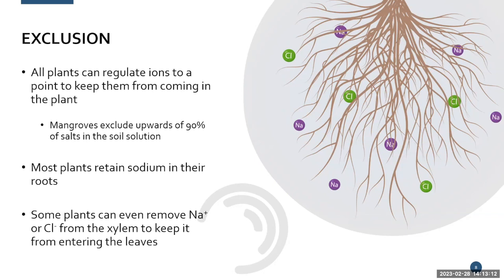Plants can also try to retain sodium in their roots to prevent ion toxicity. If sodium or chloride accumulates and gets to the leaves, the plant can't perform photosynthesis and reactive oxygen species will break up membranes. So the plant tries to retain that sodium and chloride in its roots. If the concentration is so high it can't be stopped from entering the xylem, certain plants can actually grab that sodium and chloride and send it back down to the roots — this is called ion retrieval. It's still a relatively new discovery.